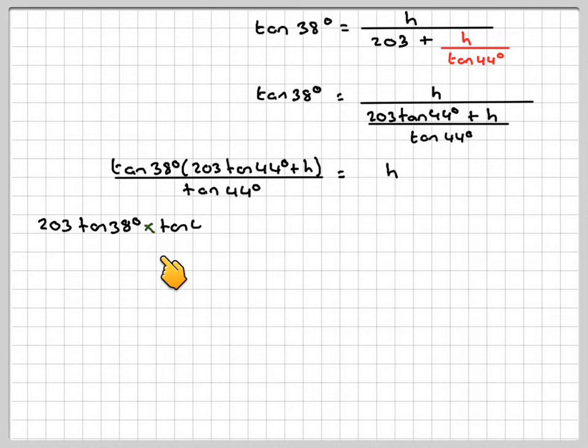So we're going to have 203 tan 38 times tan 44. I've written the multiplication sign in now because I think on the calculator, if you put those two together, it won't work. Then h times tan 38 all over...